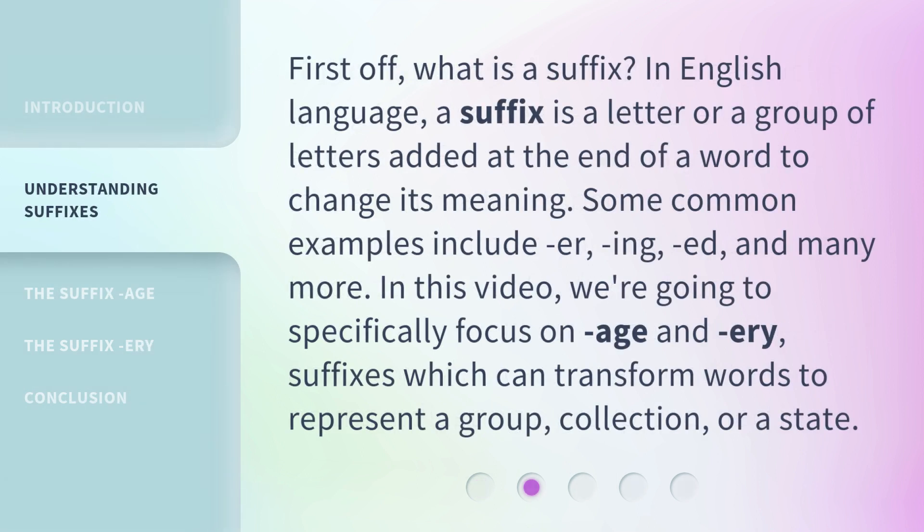First off, what is a suffix? In the English language, a suffix is a letter or a group of letters added at the end of a word to change its meaning. Some common examples include '-er', '-ing', '-ed', and many more. In this video, we're going to specifically focus on '-age' and '-ary', suffixes which can transform words to represent a group, collection, or a state.